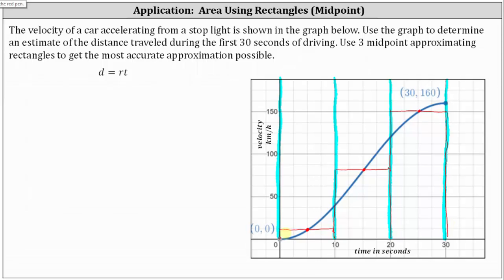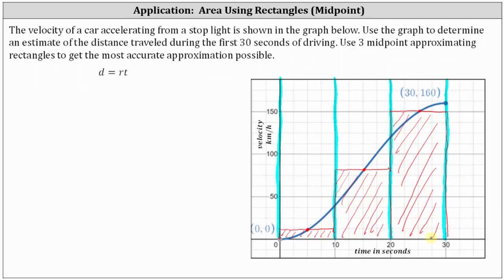Let's go ahead and shade the area of the three rectangles. The area of these three rectangles represents the estimate for the distance traveled during the first 30 seconds. Notice we have velocity along the vertical axis and time along the horizontal axis, and velocity times time equals distance.